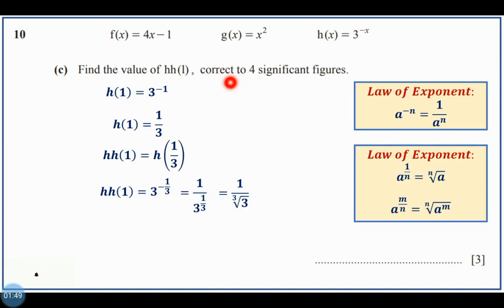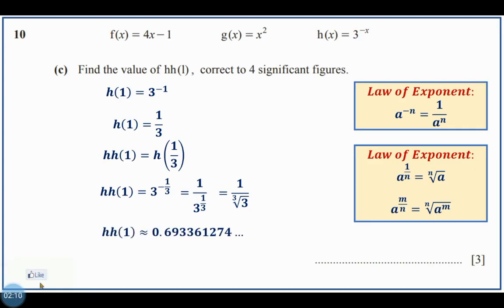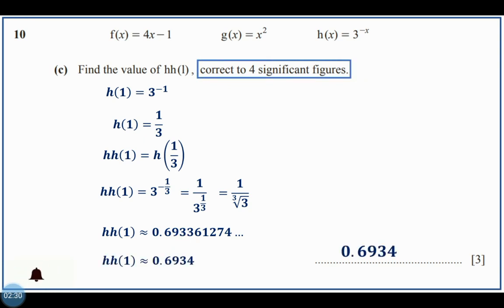The question asks for the answer correct to 4 significant figures. Calculating in the calculator: 0.693361274. Considering 4 significant figures — 6, 9, 3, 3 — and since the following digit is 6, the answer rounds to 0.6934.